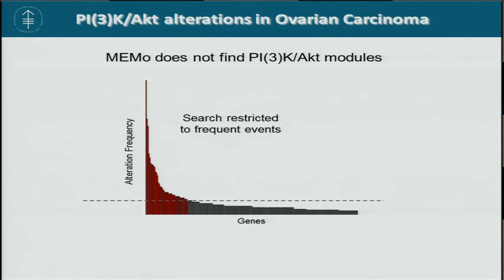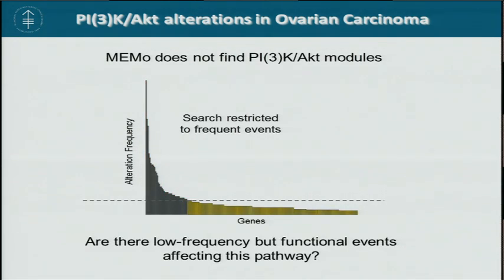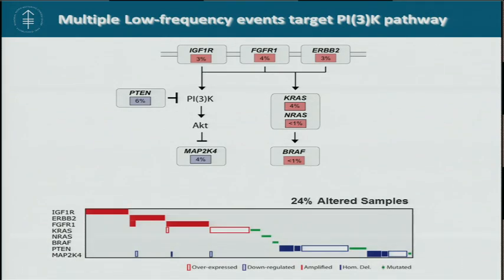Indeed, we did not find a strong signal from frequently altered genes in serous ovarian cancer. So we asked: are there low-frequency but functional events affecting the PI3K-AKT signaling cascade in ovarian cancer? Looking at core components of this pathway, we see multiple low-frequency events, including RTK amplification, rare but functional mutations in RAS, PTEN downregulation, and MAP2K4 downregulation. When we aggregate all these alterations, up to 24% of ovarian cancer tumors have alterations in this pathway, and they show a nice pattern of mutual exclusivity even among rare events.